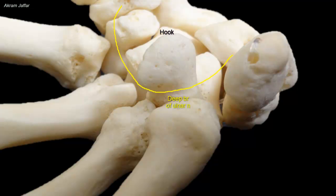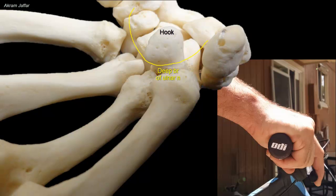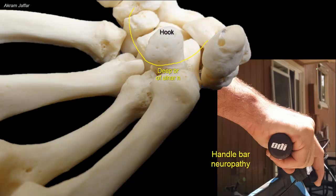Because the ulnar nerve is so close to the hook of the hamate, the nerve may be injured by fractures of the hook. People who ride long distances on bicycles with their hands in an extended position against the hand grips put pressure on the hook of the hamate, which compresses the ulnar nerve. This is called handlebar neuropathy and results in sensory loss on the medial side of the hand and weakness of the intrinsic muscles of the hand supplied by the ulnar nerve.